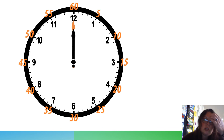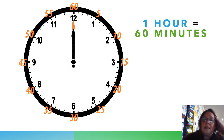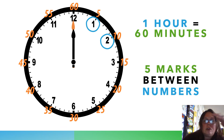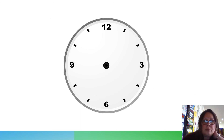Now let's look at the clock face with the minute marks. We have the hours in the inner circle and the minutes on the outer circle. There are still five marks between the numbers, and those hour numbers are also going to help you with minutes. Each hour is represented by certain minutes — so it could be 5, 10, 15, and so on. Those numbers are going to be used for both the hours and the minutes. Let's do some practice.